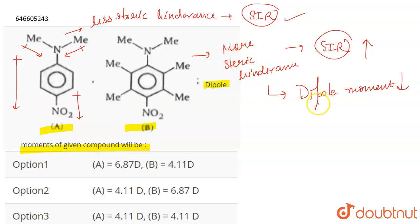And due to the less effective resonance, dipole moment will be less. Whereas if you talk about compound A, the resonance will be effective here and this is going to have a higher dipole moment in comparison to compound B. So the dipole moment of compound A is going to be greater than the dipole moment of compound B.